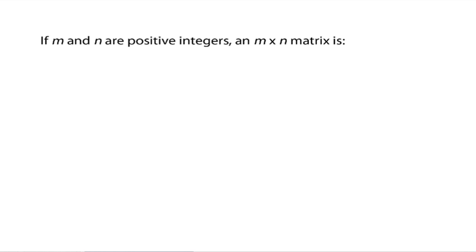If M and N are positive integers, an M by N matrix is - we're going to write it down here in just a minute. In general, a matrix is what we refer to as a rectangular array of numbers. This is a general two-dimensional matrix.